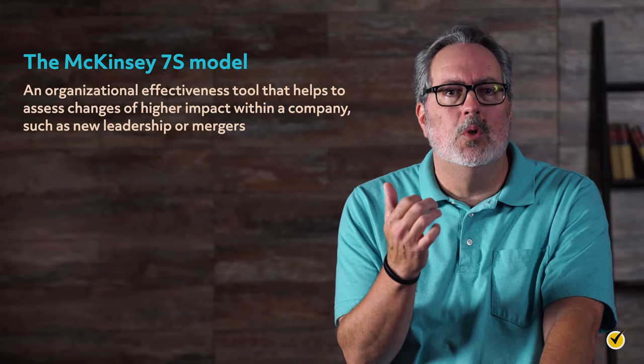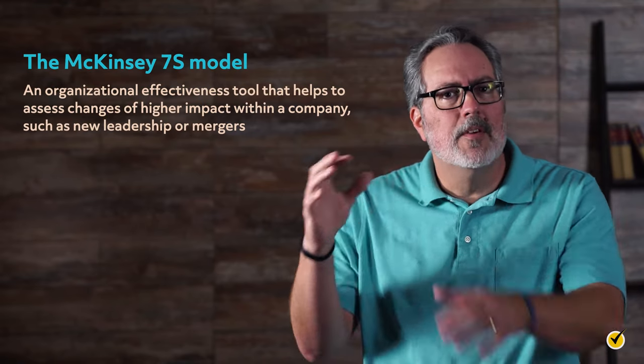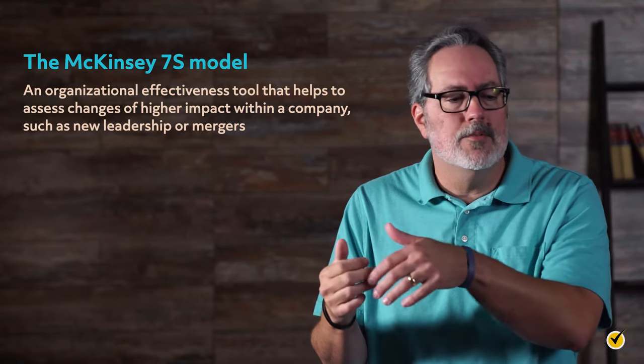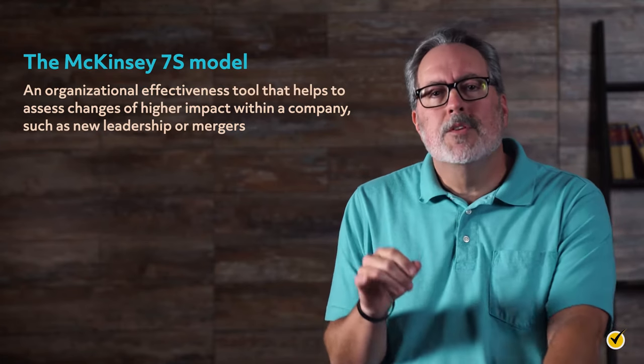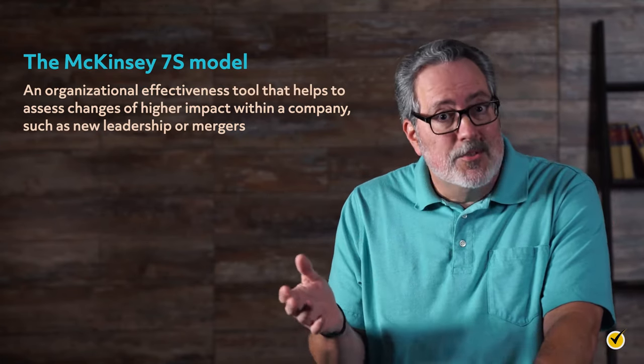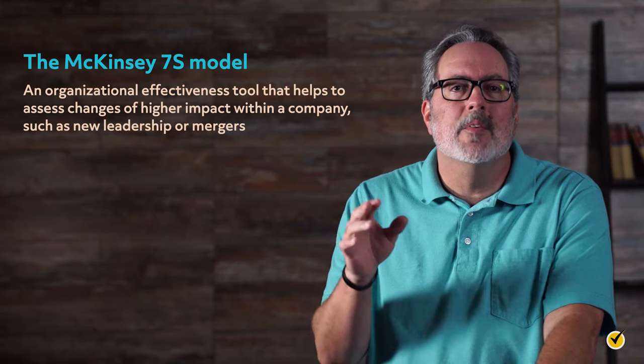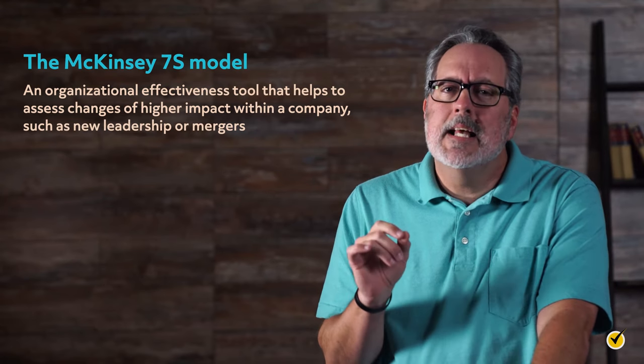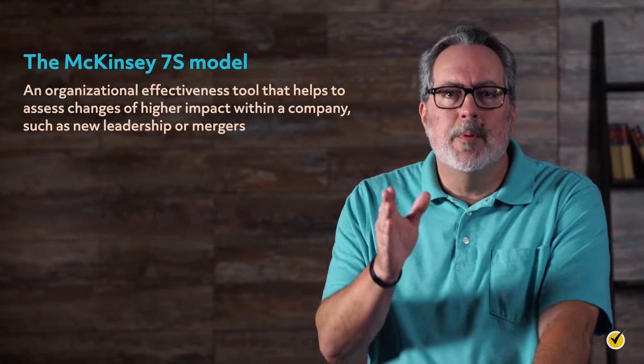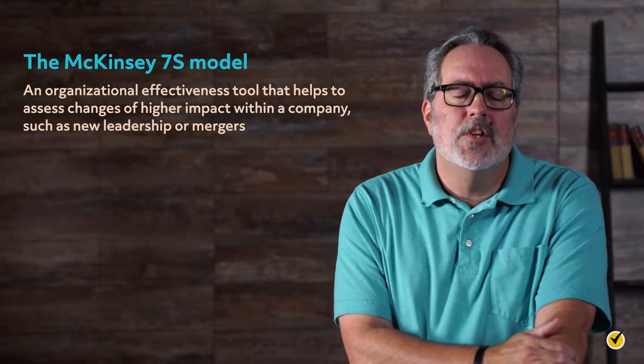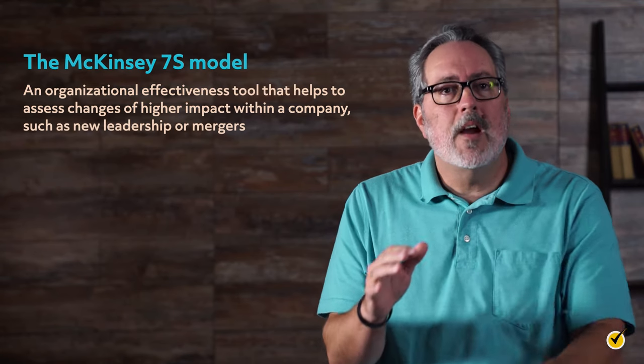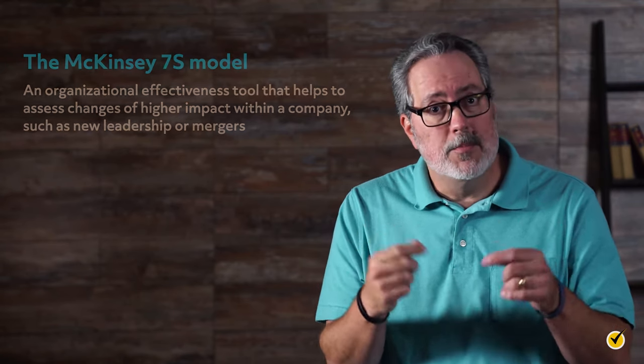Now let's turn our attention to organizational change. The McKinsey 7S model is an organizational effectiveness tool that will help assess changes of higher impact within a company, such as new leadership or mergers. This model includes seven Ss representing the seven elements of an organization. These elements must be properly aligned with business goals in order for effective change to take place. So if there are areas that are lacking, adjustments must be made.